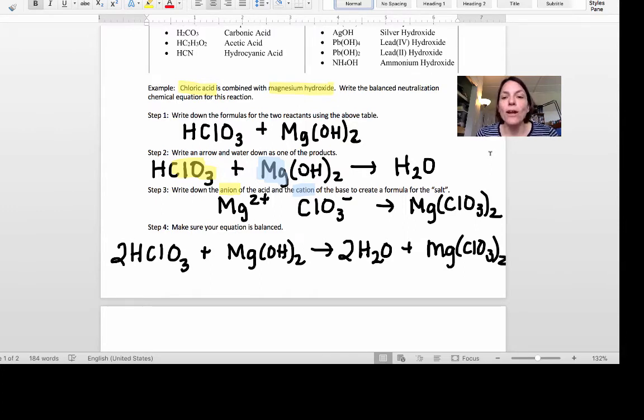Now you write a balanced compound between those two ions. Here magnesium has a plus two charge and the chlorate ion ClO3 has a minus one, which means we have to have two of the minus ones to balance out one of the plus two. So our chemical formula for our salt is going to be Mg(ClO3)2.